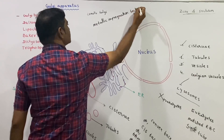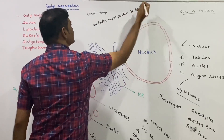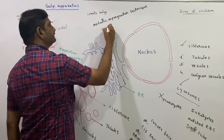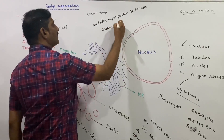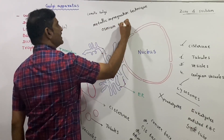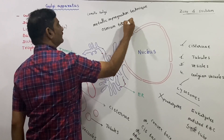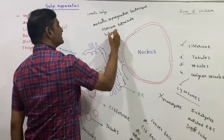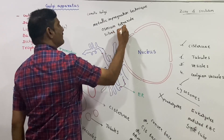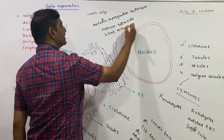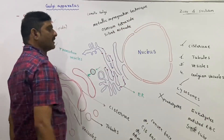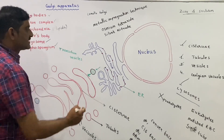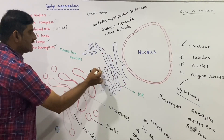The Golgi apparatus was discovered using the metallic impregnation technique. The chemicals used in this extraction technique are osmium tetraoxide and silver nitrate.